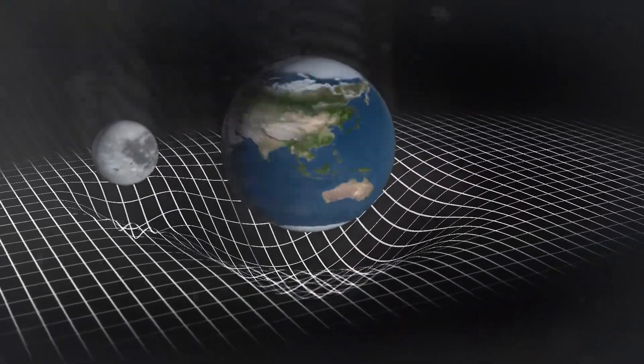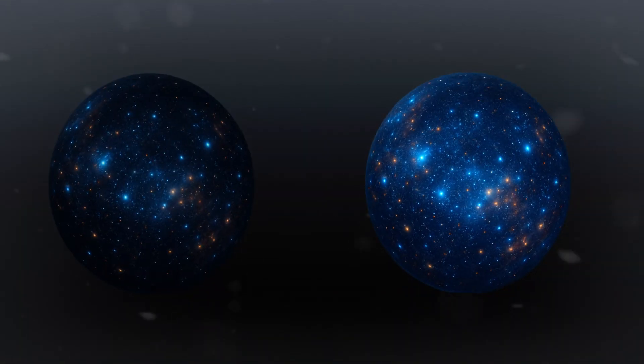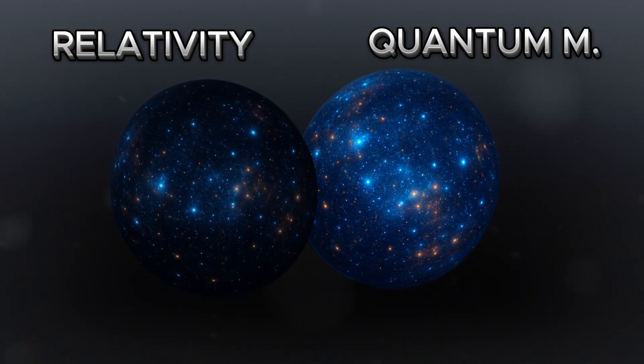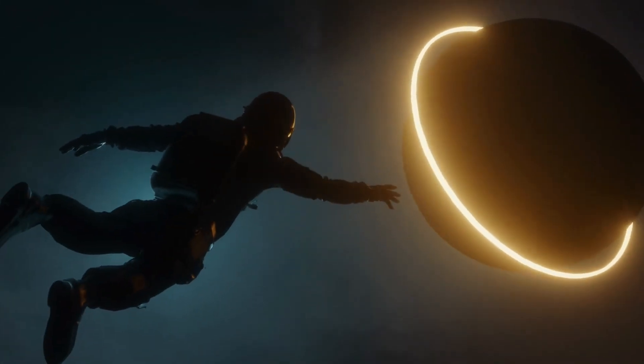This theory could help solve one of physics' biggest puzzles: how to connect general relativity, which describes gravity, with quantum mechanics, which describes the smallest particles. Wormholes naturally bring these two theories together because they exist where both are important.